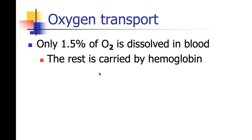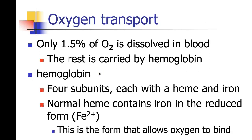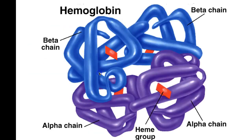Only about 1.5 percent of oxygen is dissolved in blood — the rest is carried by hemoglobin. Hemoglobin has four subunits; each has a heme and an iron molecule. Normal heme contains iron in the reduced form — this is the form that allows oxygen to bind. If we have heme differences, we might have problems carrying oxygen. There are two beta chains and two alpha chains, each chain containing a heme group — four heme groups total in one hemoglobin molecule. Each one can carry a molecule of oxygen.